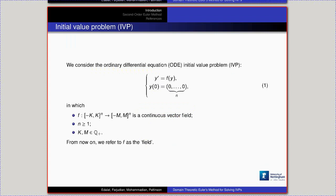We are going to consider ordinary differential equation initial value problems — IVPs for short. The differential equation is y' = f(y), an autonomous differential equation. A non-autonomous system can always be converted into an autonomous one by adding one extra variable. For simplicity, we take all initial values to be zero. Most results can be generalized to any initial values, and for rational initial values this is straightforward, though non-finitely representable initial values need more care.